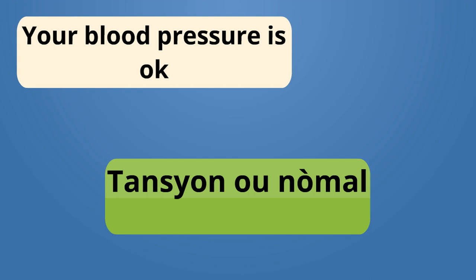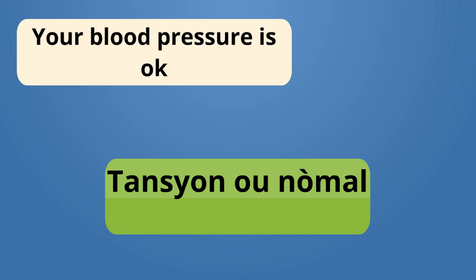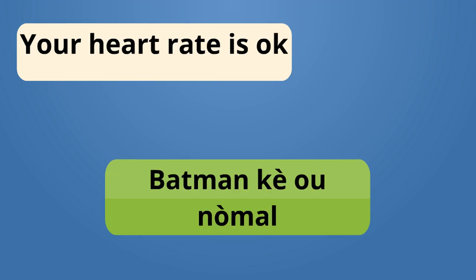Let's say your blood pressure is okay. If your blood pressure is okay, the doctor would say: Tansyon nòmal — 'tansyon' is your blood pressure. Si tansyon nou nòmal, doktè a gen dwa di: Your blood pressure is okay. Let's say your heart rate is okay. The doctor would say: Bat mak kè nòmal. 'Bat mak' is when your heart is beating. Your heart rate se bat mak kè.